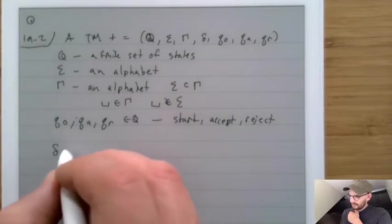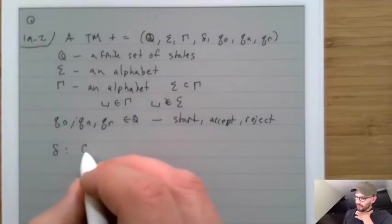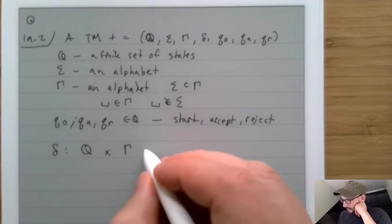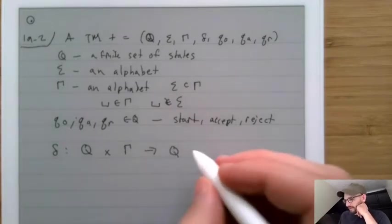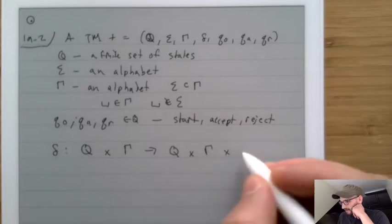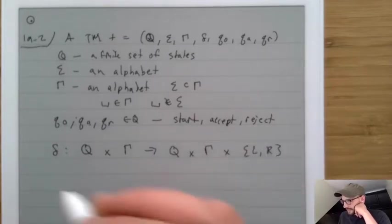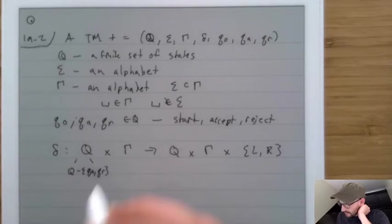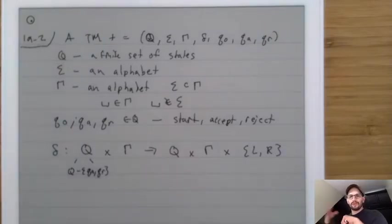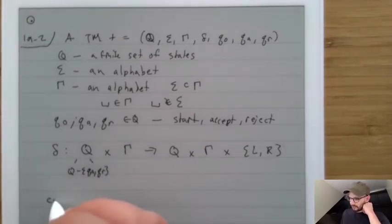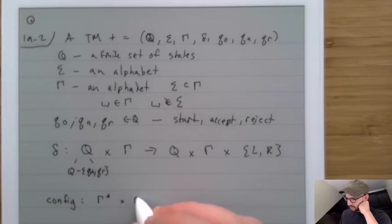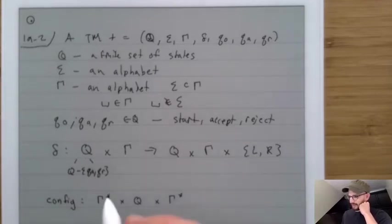Finally, Delta has the following type: it goes Q cross Gamma — that's the state cross the tape — arrow Q cross Gamma cross {Left, Right} — that's the new state. Now technically, this Q on the right is actually Q minus {qA, qR}, because once you go into qA or qR, you can't go back. A configuration of a Turing machine is a Gamma star paired up with a Q state paired up with a Gamma star.